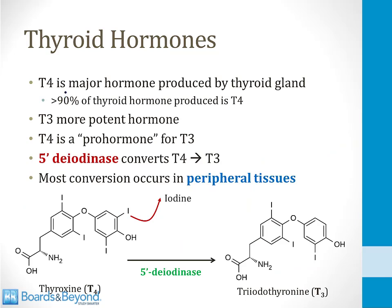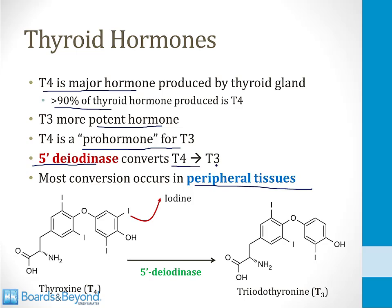Although follicular cells produce both T3 and T4, T4 is the major hormone produced — more than 90% of hormone output. However, T3 is more potent and a stronger activator of the thyroid hormone receptor. Most T3 in the body is made by peripheral conversion of T4 by the enzyme 5'-deiodinase, found in most peripheral tissues. This enzyme removes an iodine from the 5' position of T4, converting it to T3. Thus T4 is essentially a pro-hormone for T3.